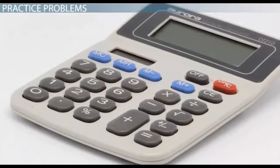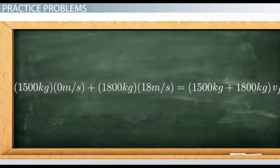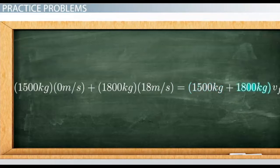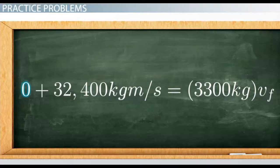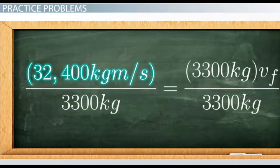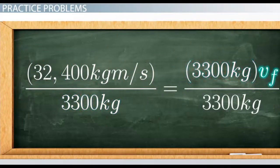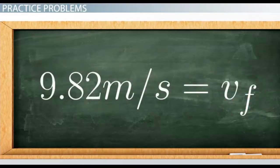You can then solve for the final common velocity of both cars. 1,500 kg times 0 m/s plus 1,800 kg times 18 m/s equals (1,500 kg + 1,800 kg) times VF. 0 plus 32,400 kg·m/s divided by 3,300 kg equals VF. Therefore, 9.82 meters per second equals VF.